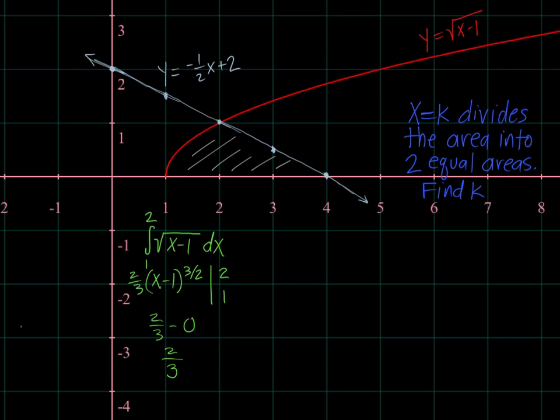So a lot of times on the last question or somewhere on the AP test, they'll throw in this little twist. We're talking about area now, not volume. And x equals k divides the area into two equal areas, find k. So there's a vertical line somewhere, x equals k, that's going to cut this area into two equal areas. So I've done a little bit of background. First of all, this triangle over here has an area of one. Go back to geometry, one-half base times height. So here's one. So what I've found is the integral over here, I integrated the square root of x minus 1 from 1 to 2. The integral of that is x minus 1 to the three-halves over three-halves or times two-thirds.